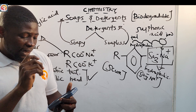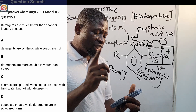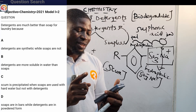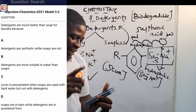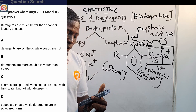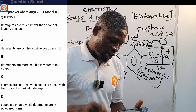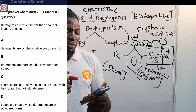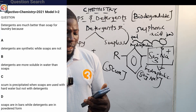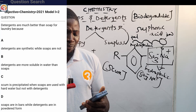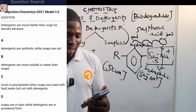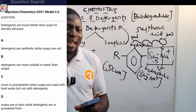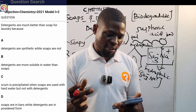2021, number 2: detergents are much better than soaps for laundry because — A: detergents are synthetic while soaps are not; B: detergents are more soluble in water; C: scum is precipitated when soaps are used with hard water but not with detergents; D: soaps are in bars while detergents are in powder form. Correct answer is option C — scum is precipitated when soaps are used with hard water but not with detergents.